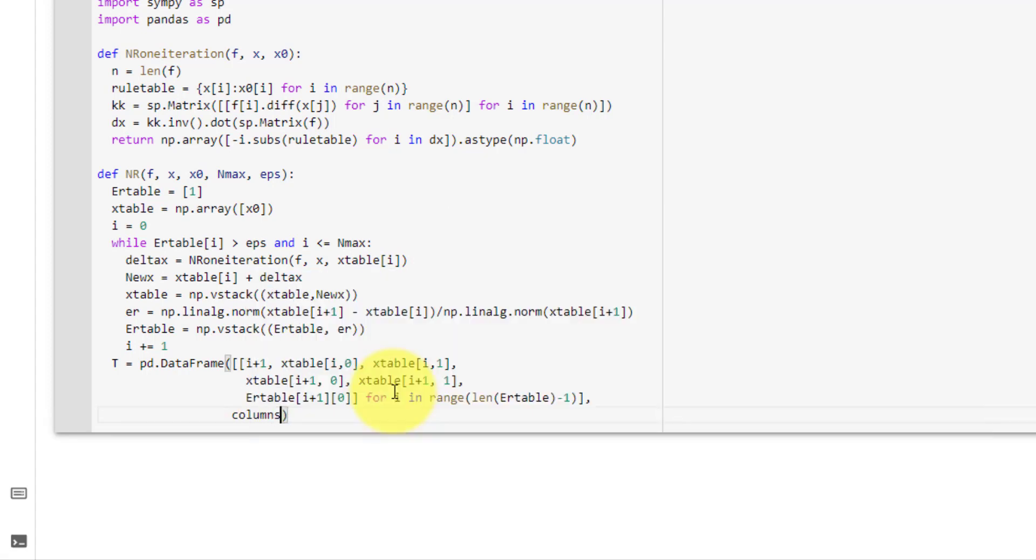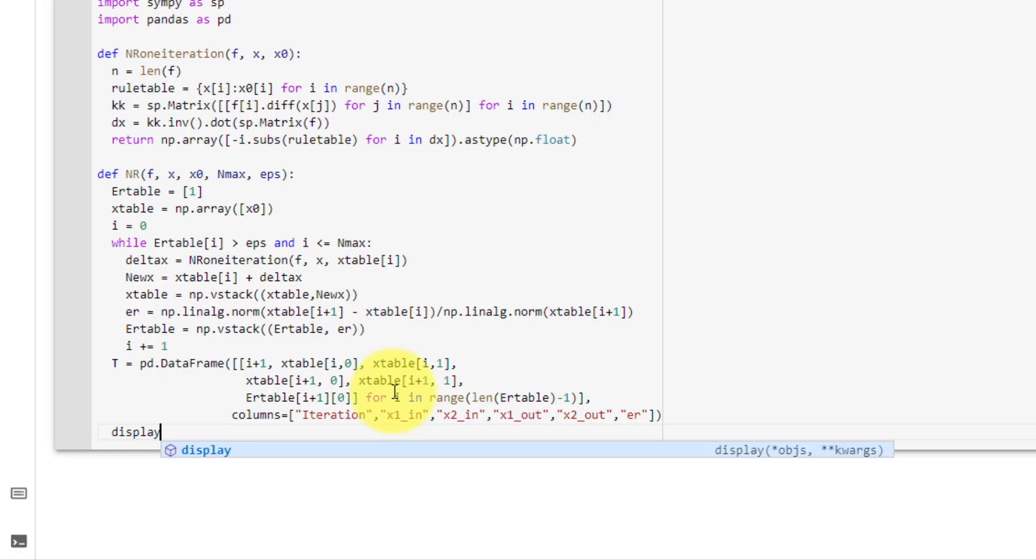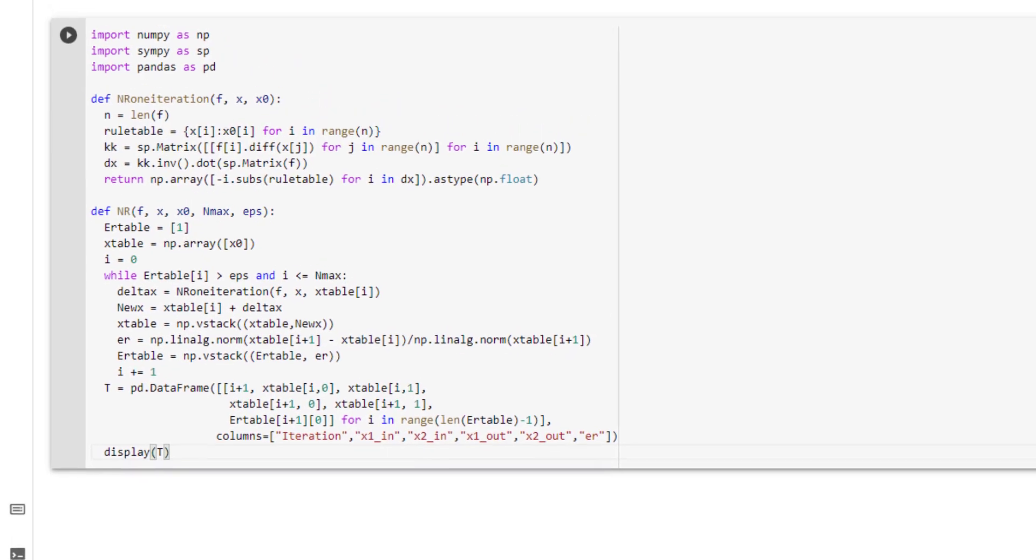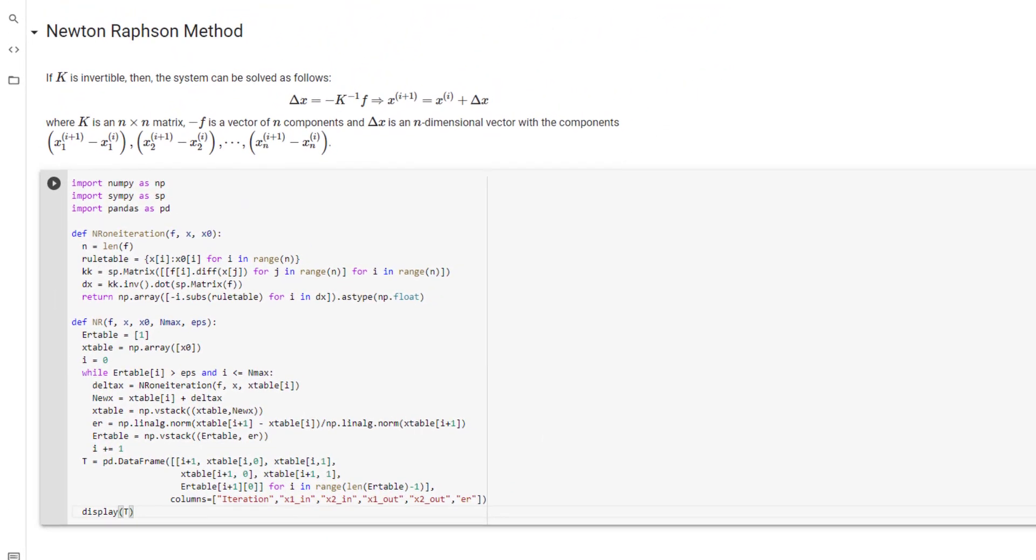Then our column headers will be equal to iteration x1 underscore in x2 underscore in. If we had an x3, we would also need an x3 underscore in, where in this case we only have x2. Our next header will be x1 underscore out, and then x2 underscore out, and then er. Finally, go ahead and display t. And here we have the full code for Newton-Raphson method.